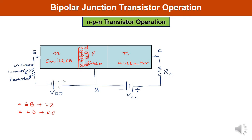The depletion region at the collector-base junction will be large because this junction is reverse biased. In reverse bias, the depletion layer width is large. On the P side, acceptor atoms, and on the N side, donor atoms are accumulated — the same basic concept as in the P-N junction diode. This is the depletion region at the emitter-base junction, and this is the depletion layer width at the base-collector region.